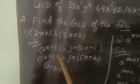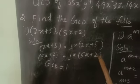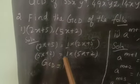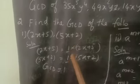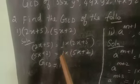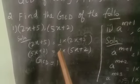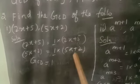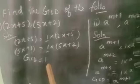So (2x + 5) can be written as 1 × (2x + 5), and (5x + 2) can be written as 1 × (5x + 2). Here the coefficients have a common factor of 1, and the terms are not common. So the GCD of these two terms is 1.